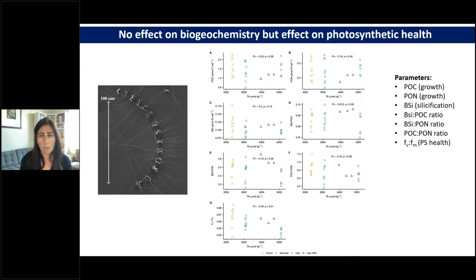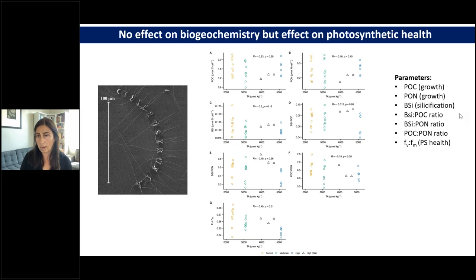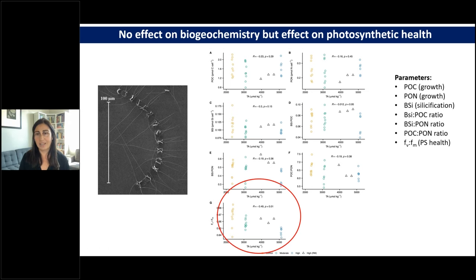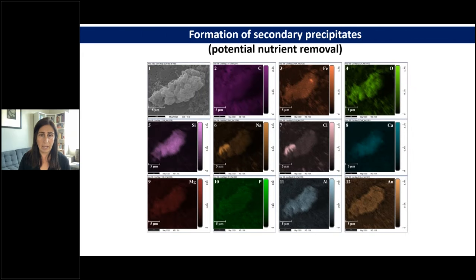We found kind of the same with diatoms — we looked at POC, PON, and instead of calcium carbonate production, we looked at biogenic silica and ratios of biogenic silica to POC and PON. The Fv over Fm results were very similar to those we found with coccolithophores — under 3% difference between the high and low alkalinity treatments, small but significantly different. The formation of secondary precipitates was something we found under high alkalinity conditions in some treatments. We looked at dissolved nutrients in the water, and using scanning electron micrographs of the precipitates, we found that silicone was a big component of these aggregates, along with phosphorus, iron, and other elements.